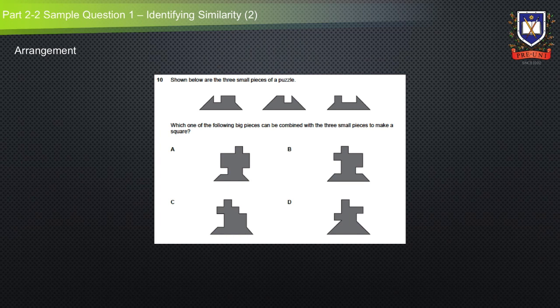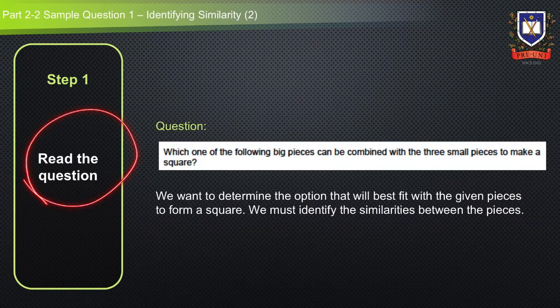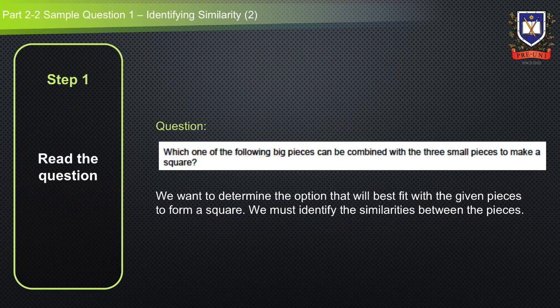Let's apply the general approach method to solve the question. The first step is to read the question and determine what it is asking. Since it is asking which one of the following big pieces can be combined with the three small pieces to make a square, we want to determine the option that will best fit with the given pieces to form a square. We must identify the similarities between the pieces.